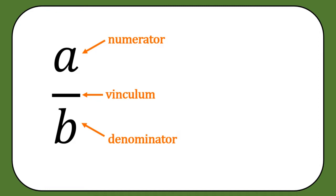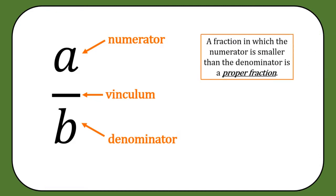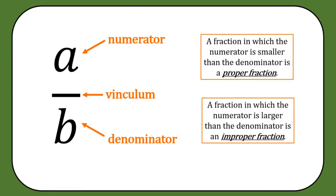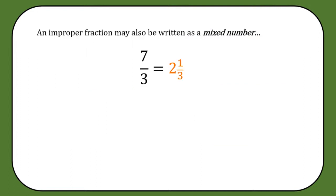A fraction in which the numerator is smaller than the denominator is called a proper fraction. When the numerator is larger than the denominator, that is referred to as an improper fraction. An improper fraction may also be written as a mixed number. So 7 thirds is an improper fraction because 7 is larger than 3, and we can write 7 thirds as 2 and 1 third — that's its mixed number equivalent.